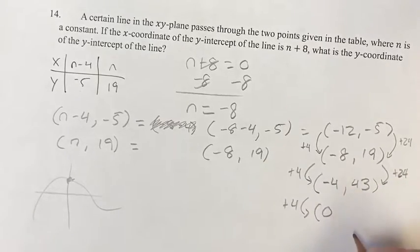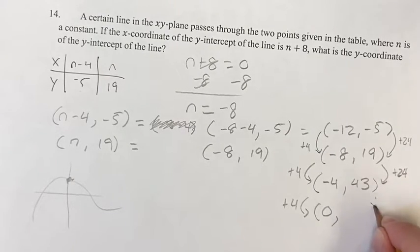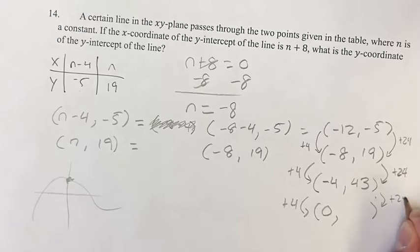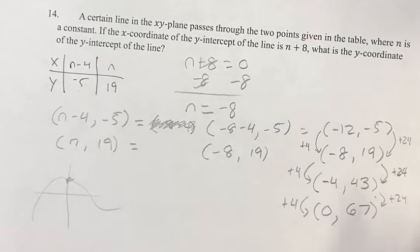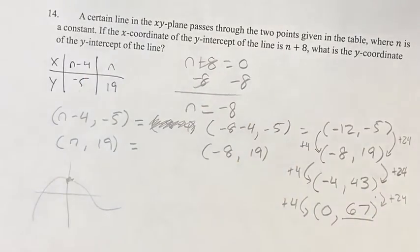You'll see if we do this one more time, adding 4 to x, we get up to 0. And this is the y-intercept, 0, adding 24 to 43. 43 plus 24 is 67. So what is the y-coordinate of the y-intercept of the line? It's 67.